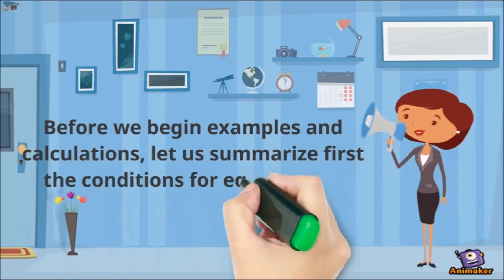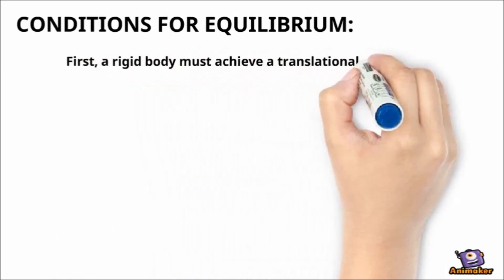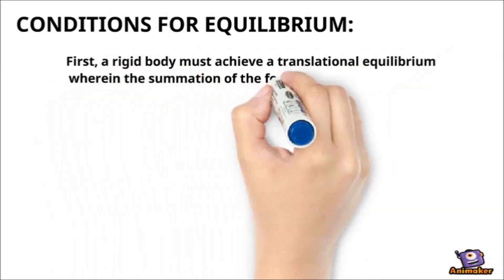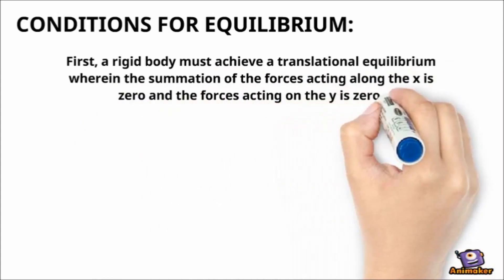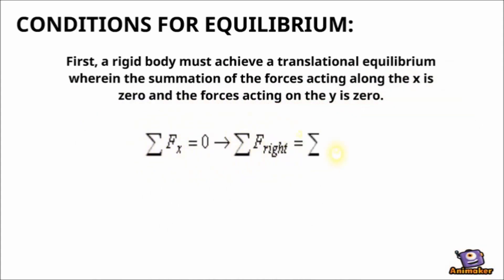Conditions for equilibrium. First, a rigid body must achieve a translational equilibrium wherein the summation of the forces acting along the x is zero and forces acting on the y is zero.